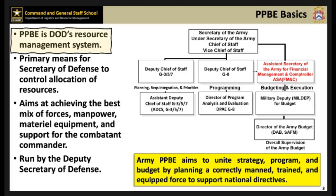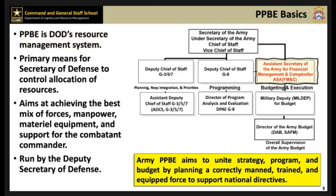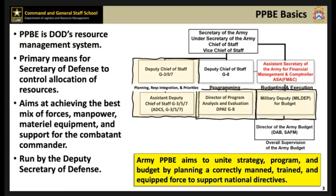The DOD PPBE process serves as its primary resource management system in support of combatant commanders. The Assistant Secretary of the Army, Financial Management, and Comptroller manages the PPBE process for the Army, with the help of the G-3/5/7, the G-8's Director of Program Analysis and Evaluation, and the Military Deputy for Budget and Execution.